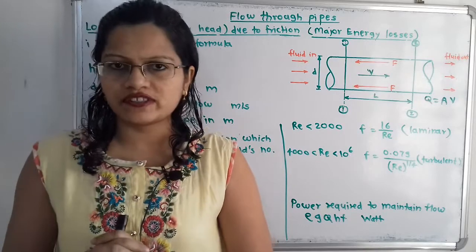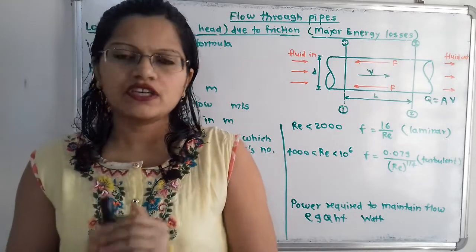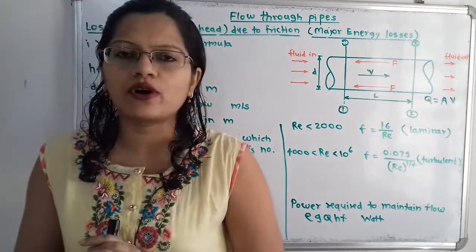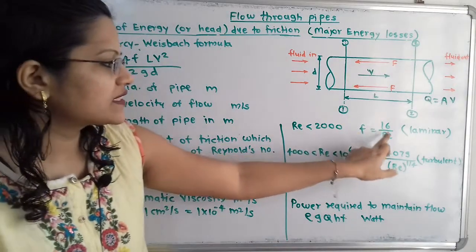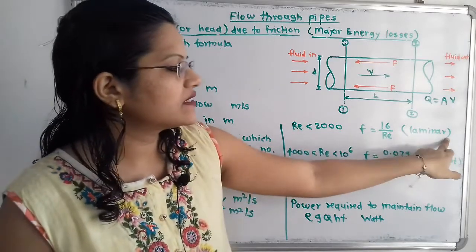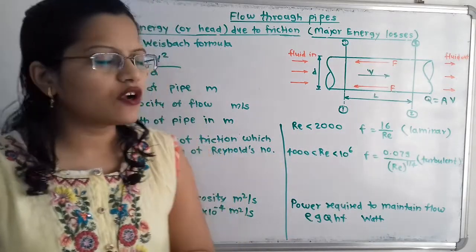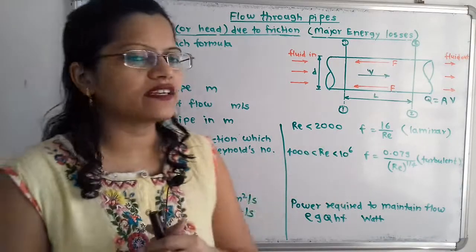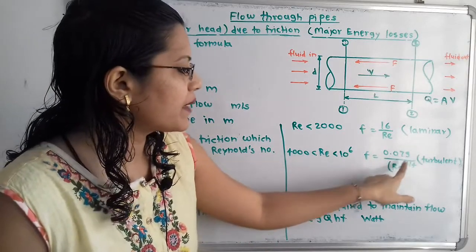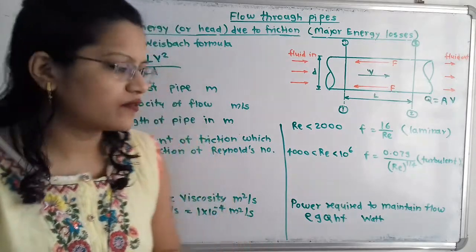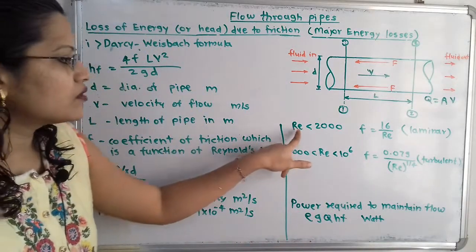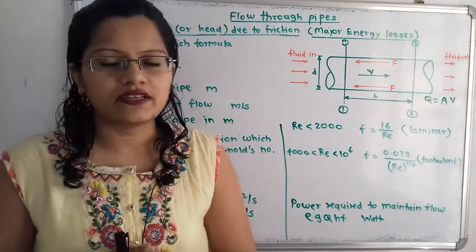We must first calculate the Reynolds number and decide its range. When RE is less than 2000, the flow is laminar and we use F = 16 / RE. When RE is between 4000 and 10⁶, the flow is turbulent and we use F = 0.079 / RE^(1/4). The formula for F depends on the Reynolds number range.